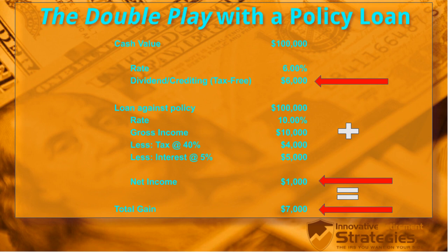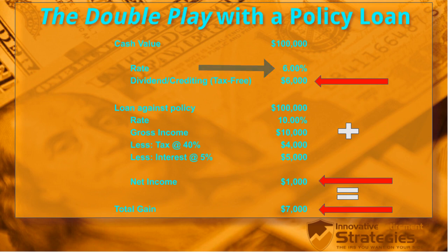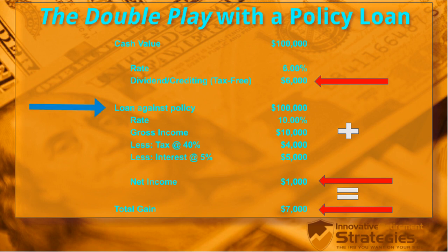Now we're looking at the Double Play with a policy loan. We're assuming a life insurance policy with $100,000 of cash value. The cash value is earning a dividend of 6%, so by the end of the year the policy itself has made $6,000, finishing the year at $106,000. On the real estate side, we take a $100,000 loan from the insurance company, and at the end of the year — assuming a 10% return — we finish with $10,000 in the bank.